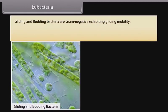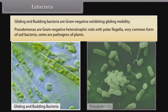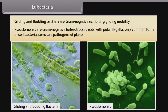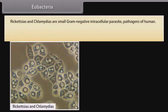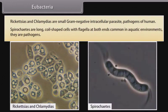Gliding and budding bacteria are gram-negative, exhibiting gliding mobility. Pseudomonas are gram-negative heterotrophic rods with polar flagella, a very common form of soil bacteria; some are pathogens of plants. Rickettsias and chlamydeas are small gram-negative intracellular parasites and pathogens of humans. Spirochetes are long coiled-shaped cells with flagella at both ends, common in aquatic environments, and are pathogens.